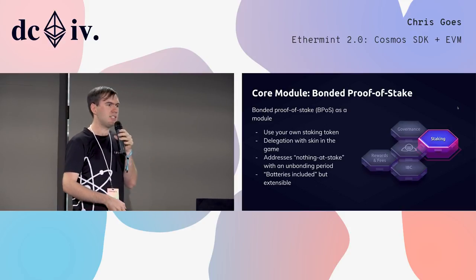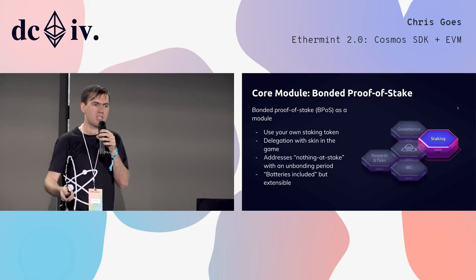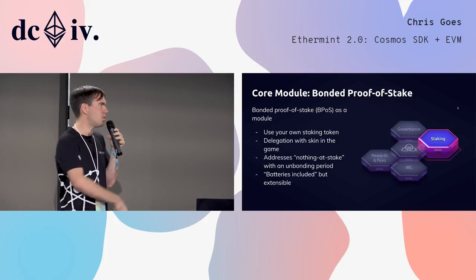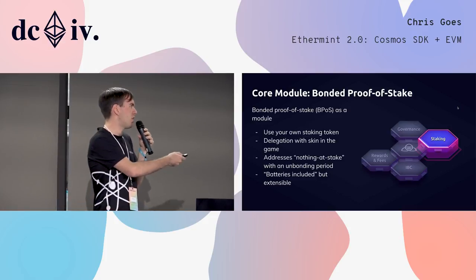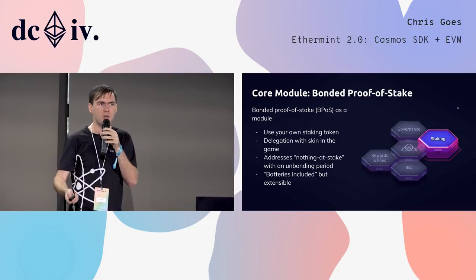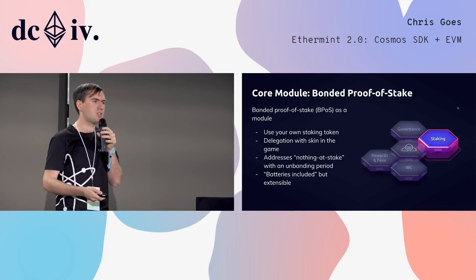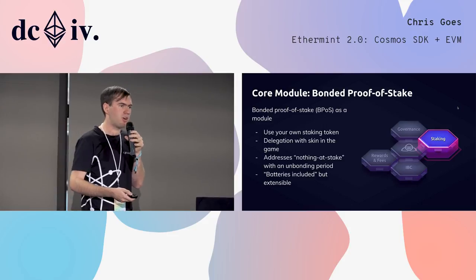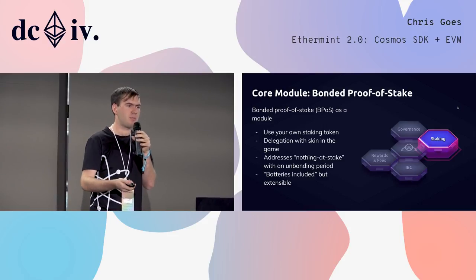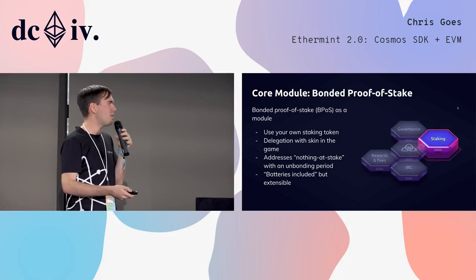Bonded proof-of-stake is the proof-of-stake mechanism which will be used by the Cosmos Hub, and which we invite any blockchains in the Cosmos ecosystem to use themselves with their own staking token. Bonded proof-of-stake has delegation with skin in the game. Delegators are liable if their validator commits a protocol fault — their validator double signs, or fails to participate in consensus for too long. The delegators can be slashed.